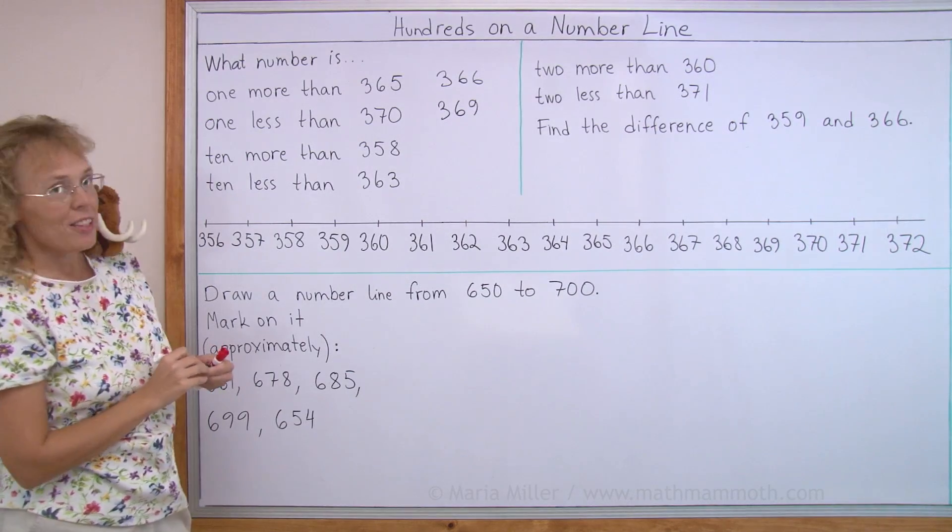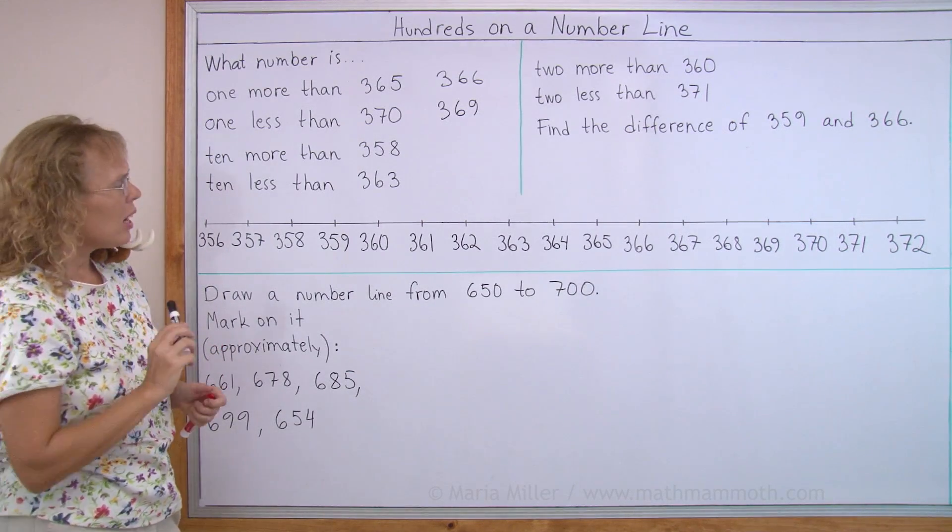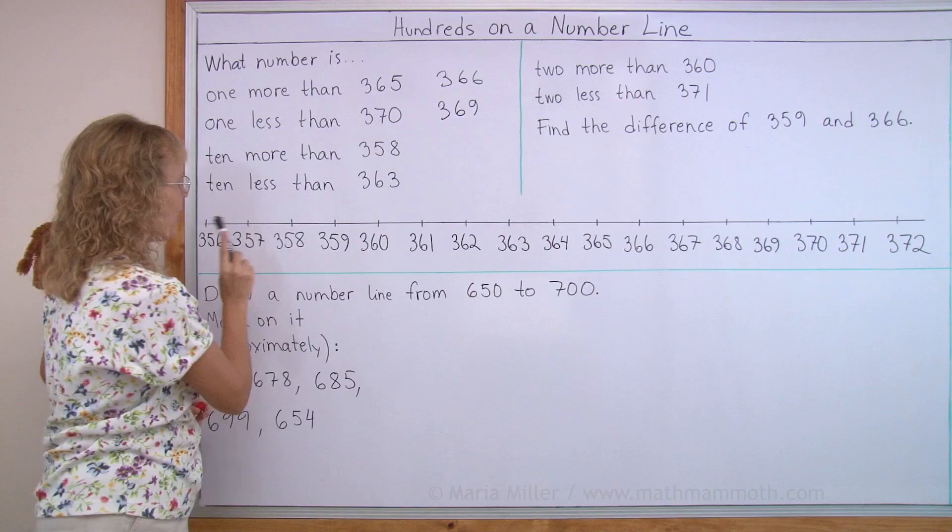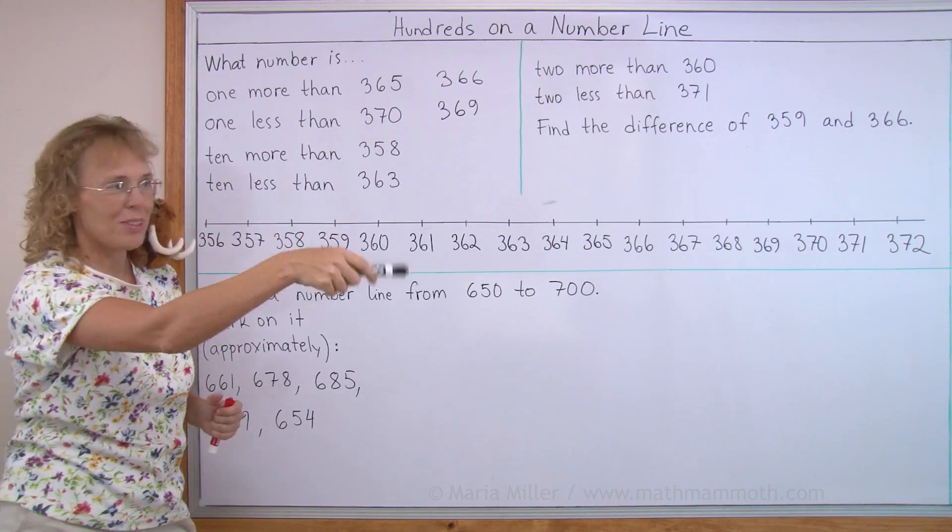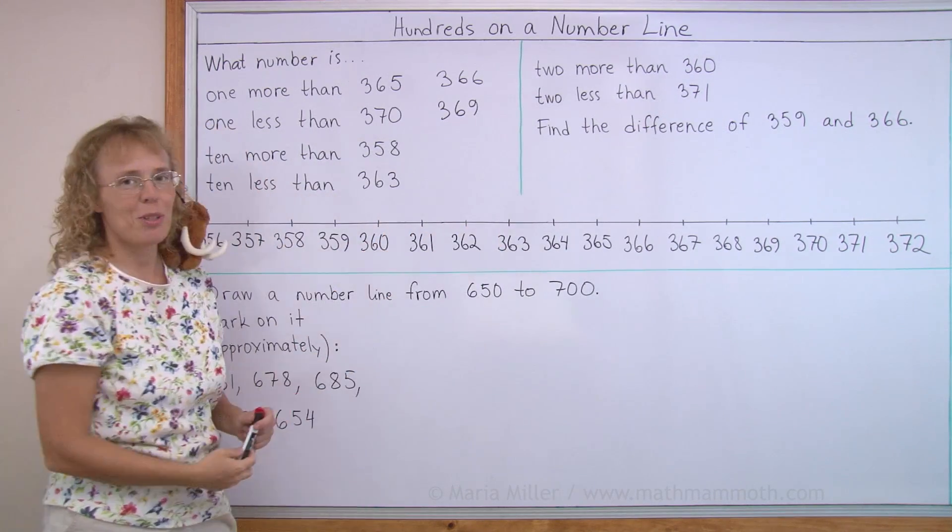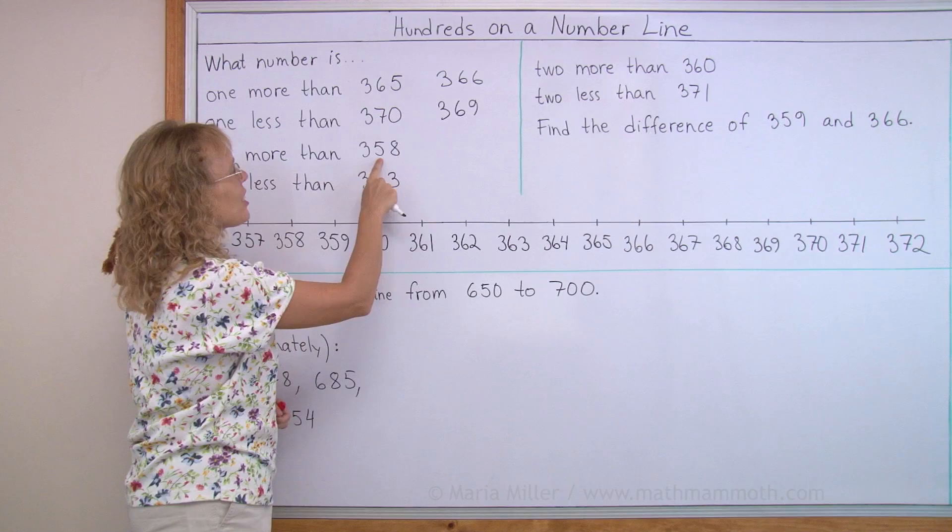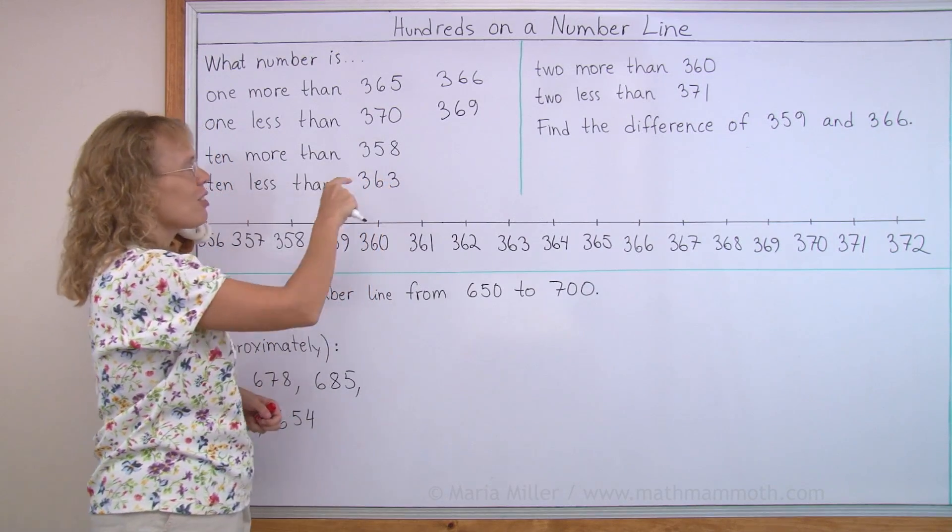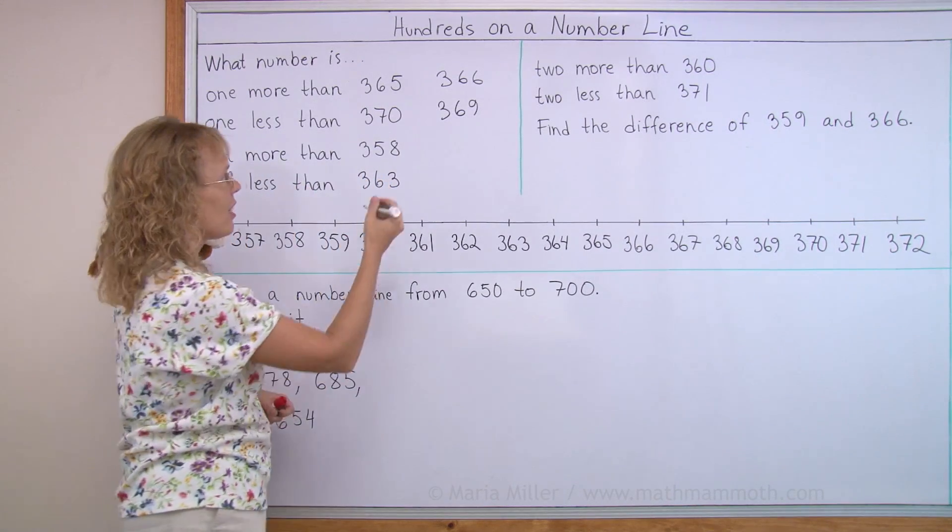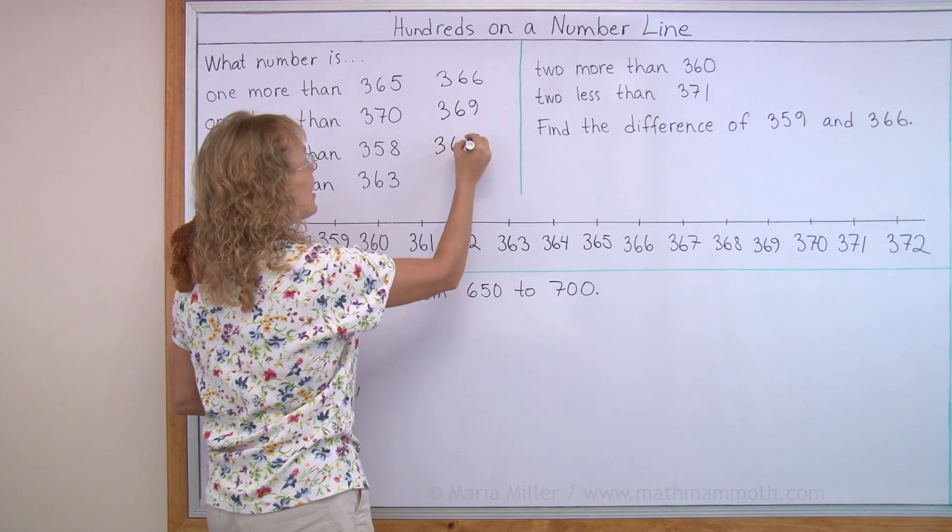10 more than 358. I could go here, okay, 358, and go 10 more. I could go 10 steps more. But I can think of this 50 here. It's going to have 10 more, so it's going to become 60, right? 368.